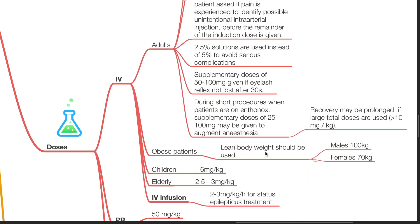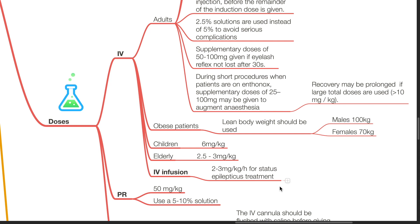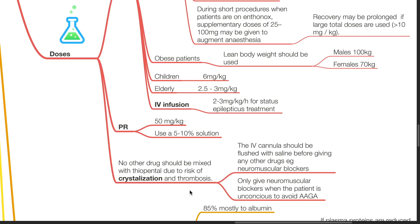Use lean body weight in obese patients, which plateaus at 100 kg for males and 70 kg for females. The dose for children is 6 mg per kg and in the elderly it should be reduced to 2.5 to 3 mg per kg. The dose for IV infusion is 2 to 3 mg per kg per hour for the treatment of status epilepticus. Thiopenthal has also been used per rectally using a 5 to 10% solution at 50 mg per kg. No other drug should be mixed with thiopenthal due to risk of crystallization and thrombosis. The IV cannula should be flushed with saline before giving any other drug such as neuromuscular blockers, and only give neuromuscular blockers when the patient is unconscious to avoid accidental awareness.